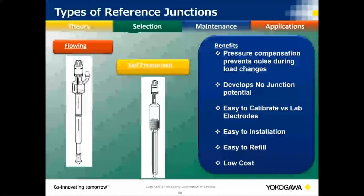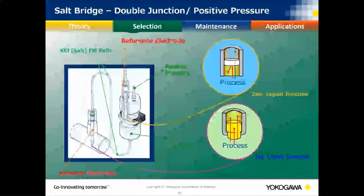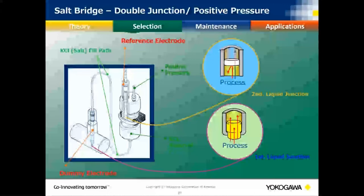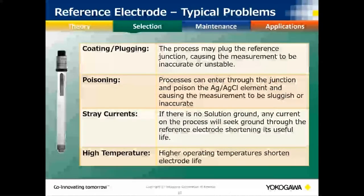In ultra-pure water applications, flowing-type junctions are common. Because the process is essentially pure water with no ions, we need to maintain continuity, so we use an open junction that allows a complete circuit between the ORP electrode and the reference. Any problems with your pH reference — coating, plugging, process poisoning — you will also have with your ORP reference.